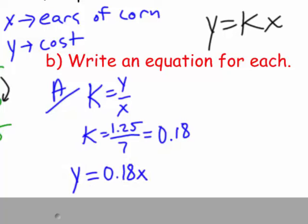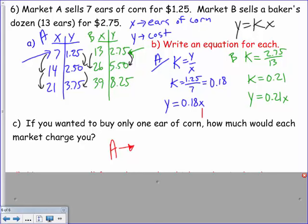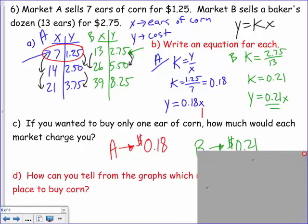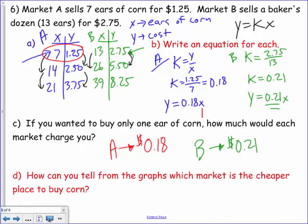To find the cost of one ear of corn, plug x equals 1 into each equation. Market A: 1 times 0.18 equals $0.18 — 18 cents per ear. Market B: 0.21 — 21 cents per ear. Dividing the price by quantity gives the unit price, so Market A is cheaper.